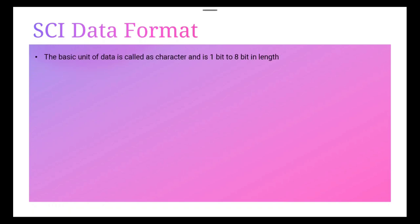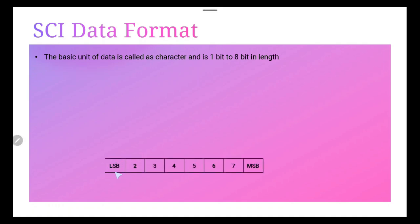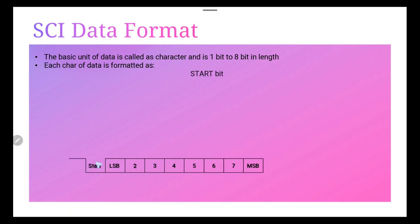The basic unit of data is called a character, which is 1 to 8 bits in length. When we add a start bit and stop bits to this data, that is known as a frame. Each character of the data is formatted as a start bit — so when we add a start bit to the data, each character is formatted with a start bit and one or two stop bits.